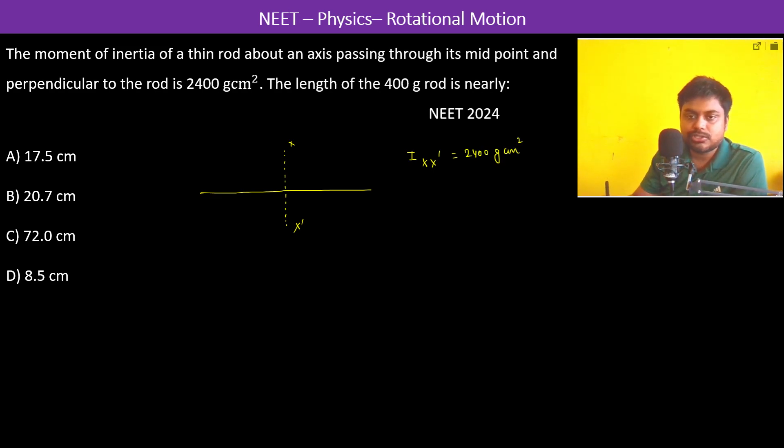Now this is equal to m l square by 12. The length of the 400 gram rod - therefore we write here 2400 gram centimeter square is equal to m which is 400 grams divided by 12 into l square. Gram gram is gone.